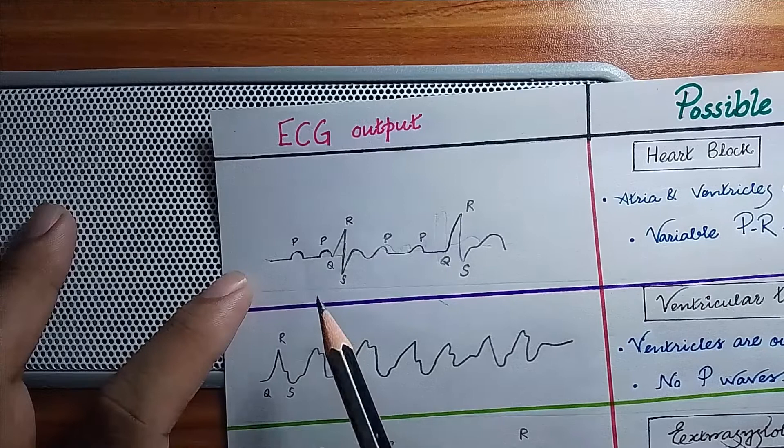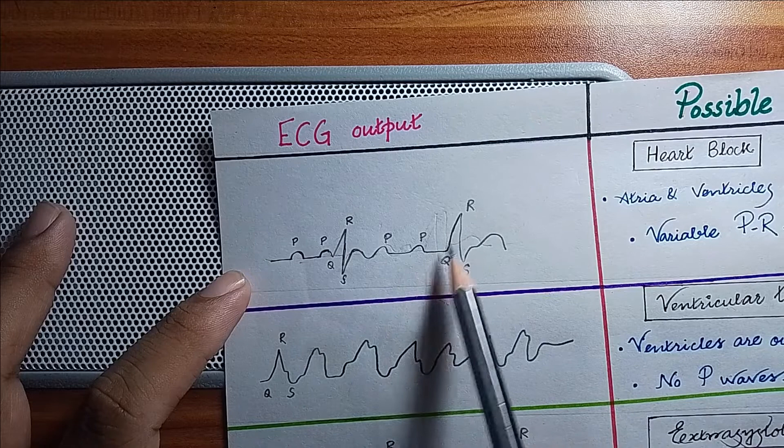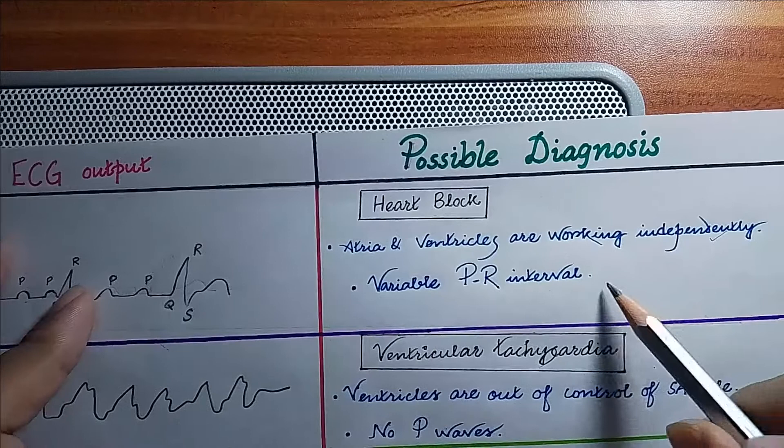...the PR interval is variable, that means atria and ventricles are working independently. So the most likely diagnosis is heart block.